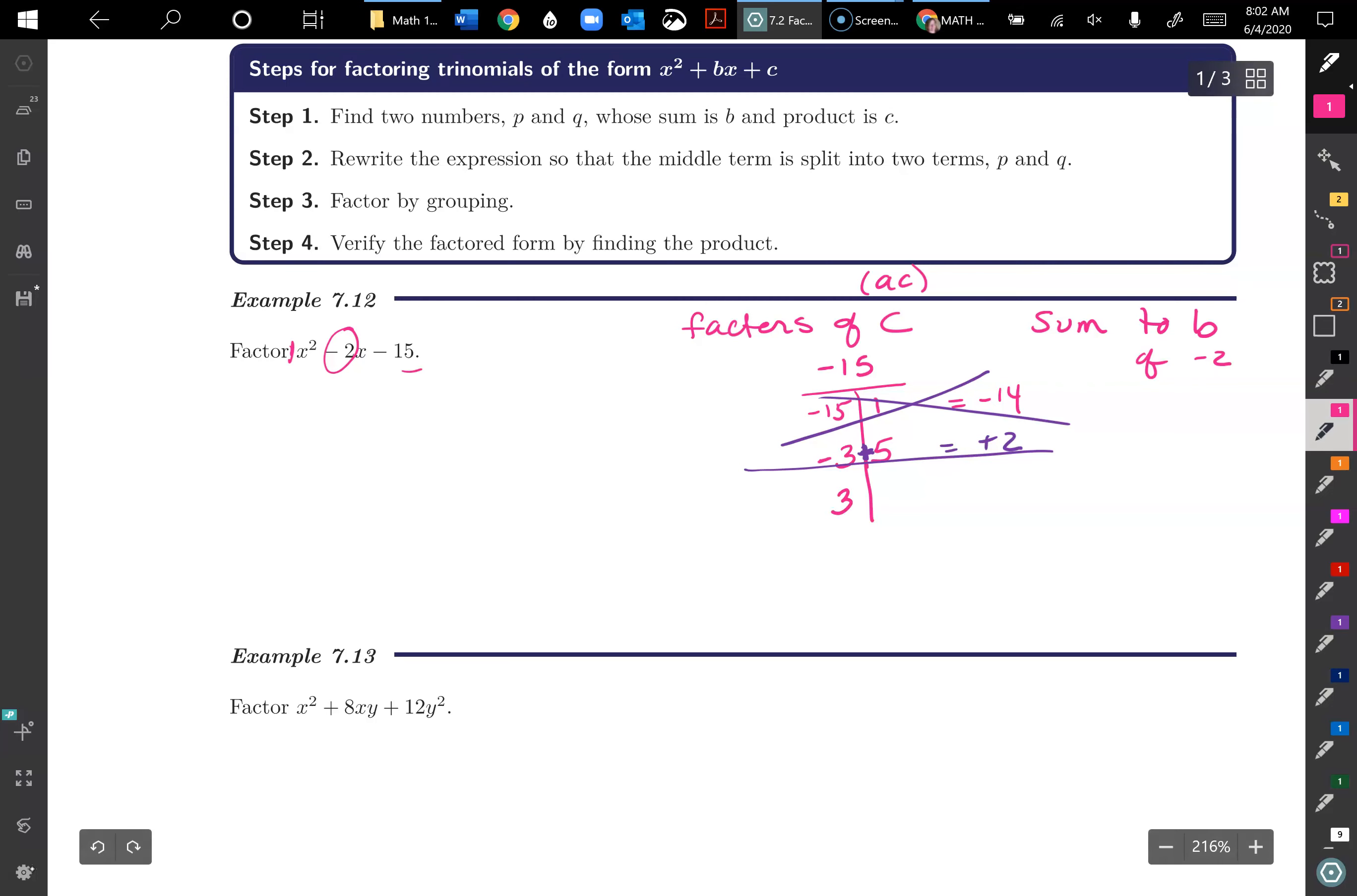So now I'm just going to say 3, a positive 3 plus a negative 5 would give me the negative 2 that I want. So that works. So now I'm going to split this back part x squared, and then it'll be plus 3x minus 5x, or actually I'm going to write it better as plus negative 5x, and then minus 15.